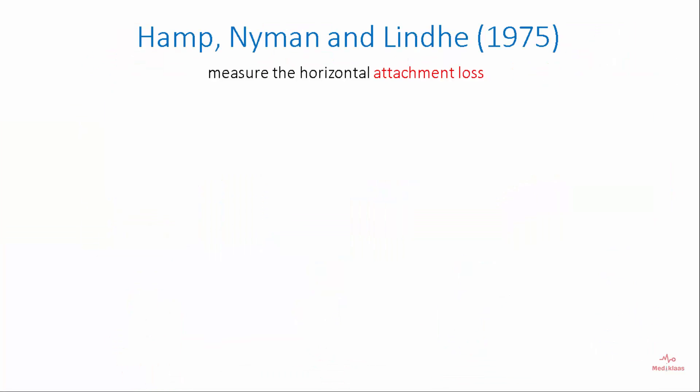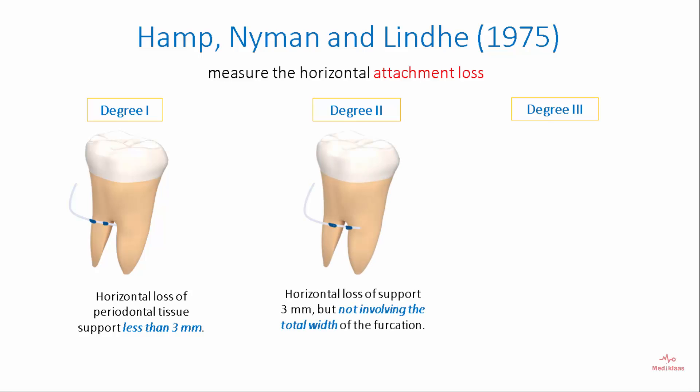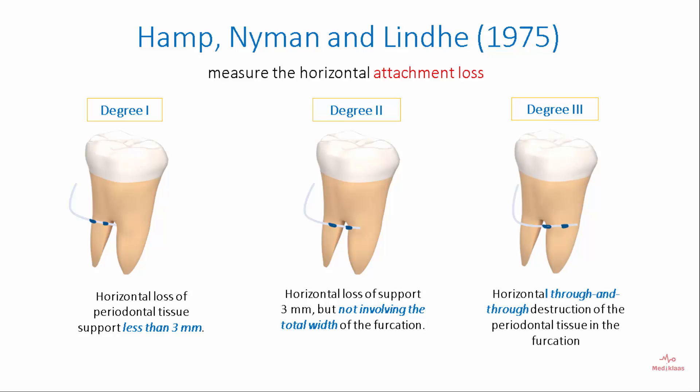Hamp, Nyman, and Linde's classification measures horizontal attachment loss and is divided into three degrees. Degree 1: horizontal bone loss of periodontal tissue support is less than 3 mm. Degree 2: horizontal loss of more than 3 mm but not involving the total width of the furcation. Degree 3: through-and-through horizontal destruction of the periodontal tissue in the furcation area.